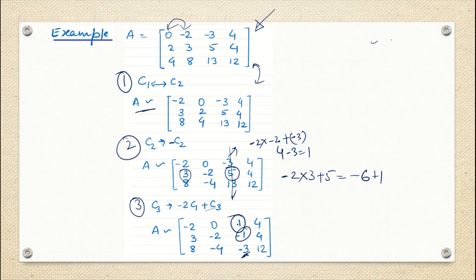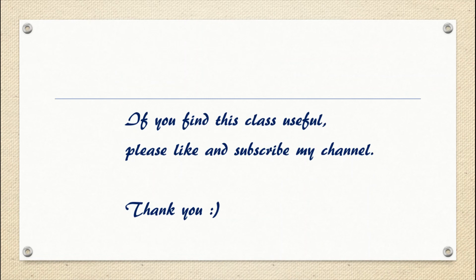This is how we perform elementary row and column operations. We are interested in these operations because we have to see many more advanced concepts, for which we need to obtain equivalent matrices based on these elementary operations. If you find this class useful, please like and subscribe to my channel. Thank you.